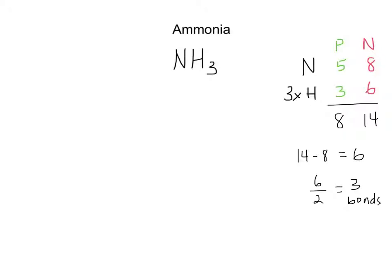Now we can start to draw the structure. Looking at the chemical formula, there's only one nitrogen and three hydrogens, so nitrogen is going to be in the center and everything's going to be bound to it. I'm just going to arrange the hydrogens around it, almost treating nitrogen like it has four sides. Since I determined that three bonds need to form, that's pretty simple — one bond apiece.